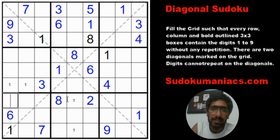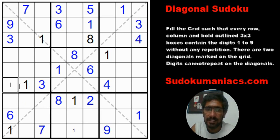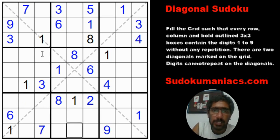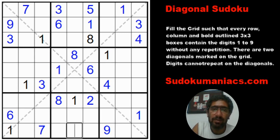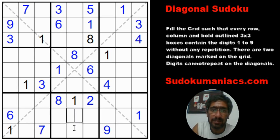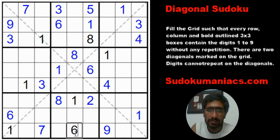We can safely eliminate, which makes the remaining 1s fall into place. And that is how we have placed all the 1s. Notice how we used the diagonals to eliminate possibilities. Now that the 1s are completed, let's look at the 6s. With these two 6s and this constraint, this becomes a 6.